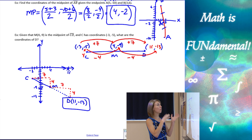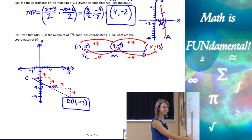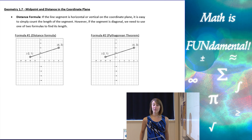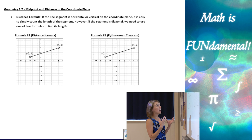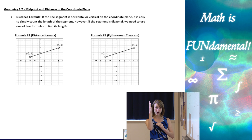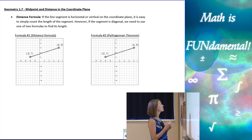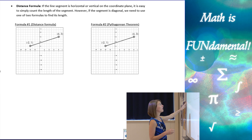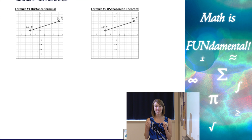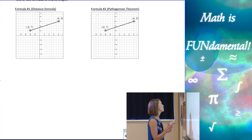Now we're moving into the distance formula. In the coordinate plane, if a line segment is horizontal or vertical you can just count its length on the graph. But for a diagonal segment you need the distance formula. I'll show you two methods for finding the length of a diagonal segment.